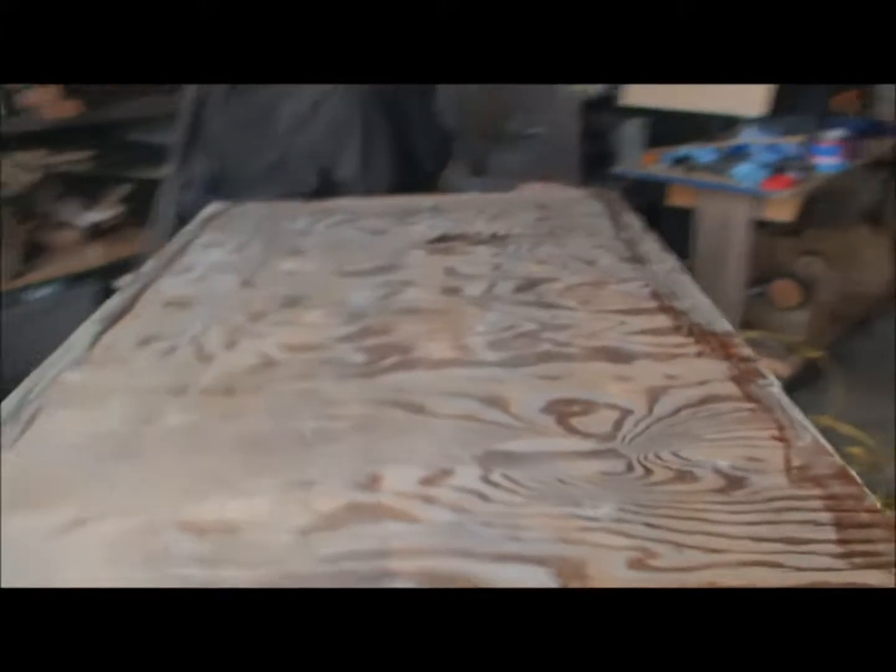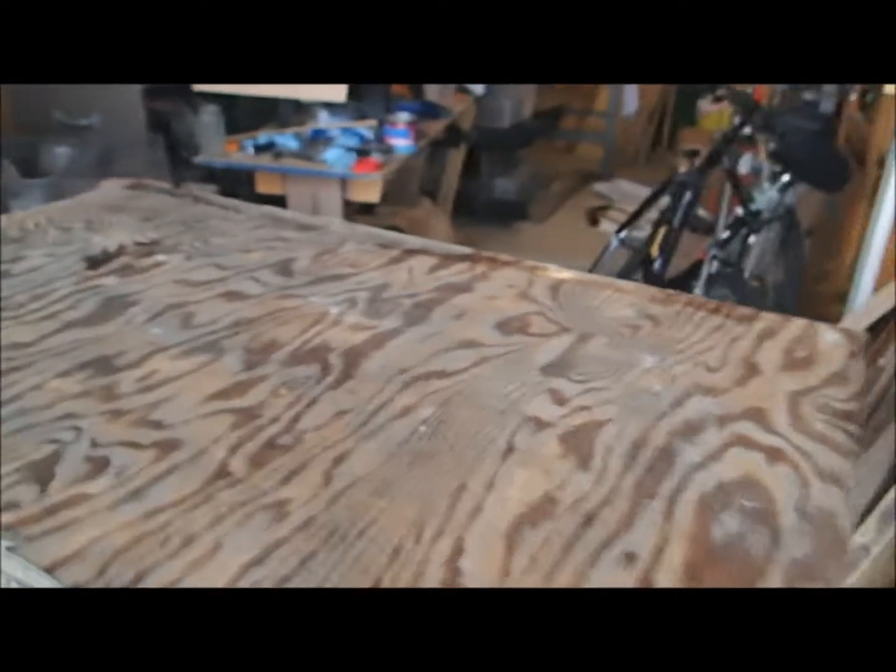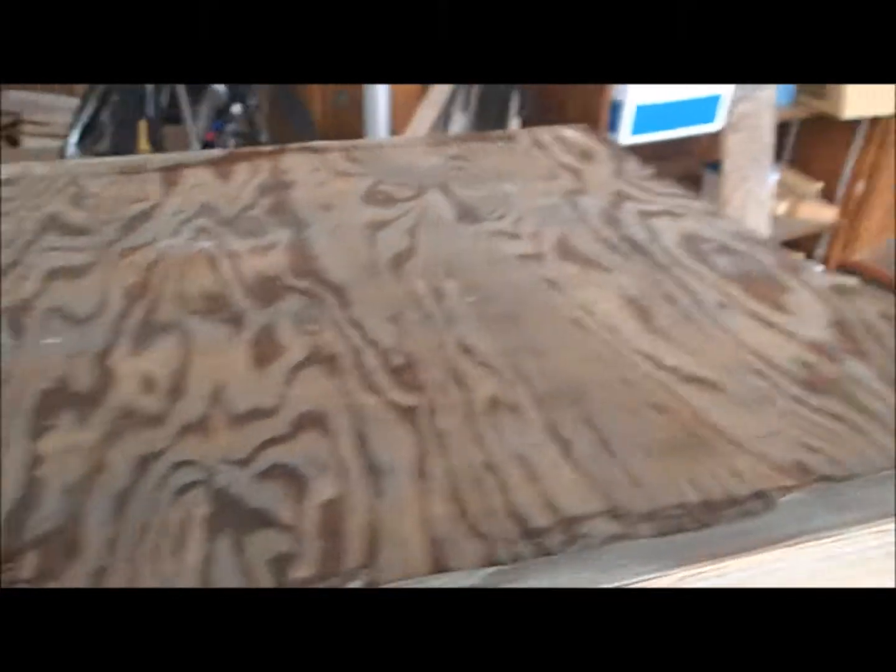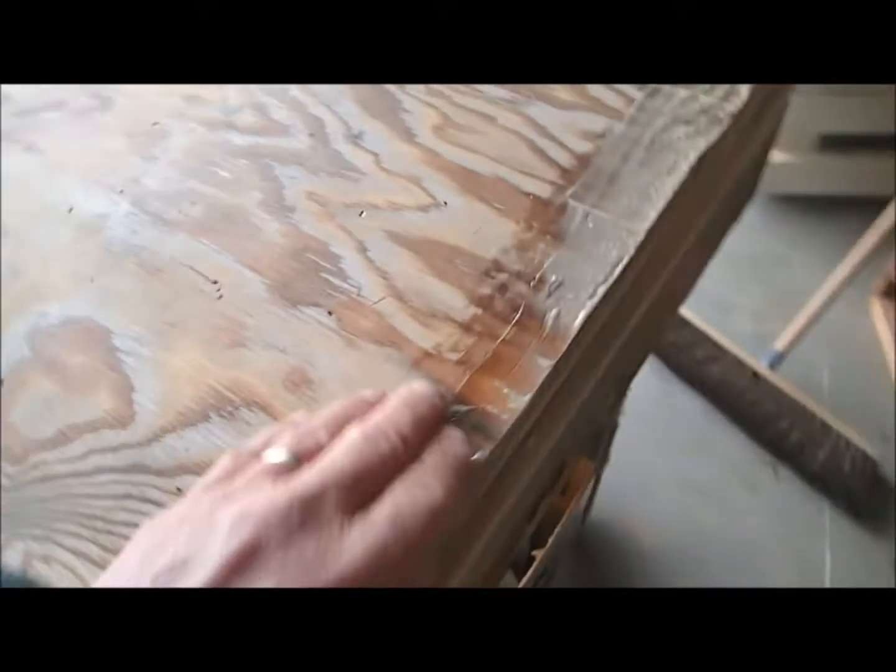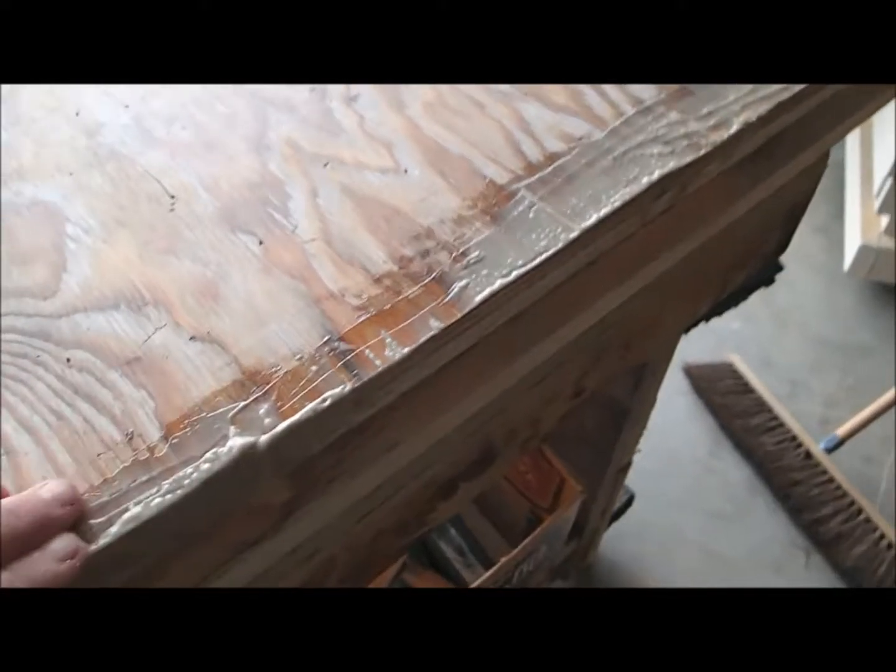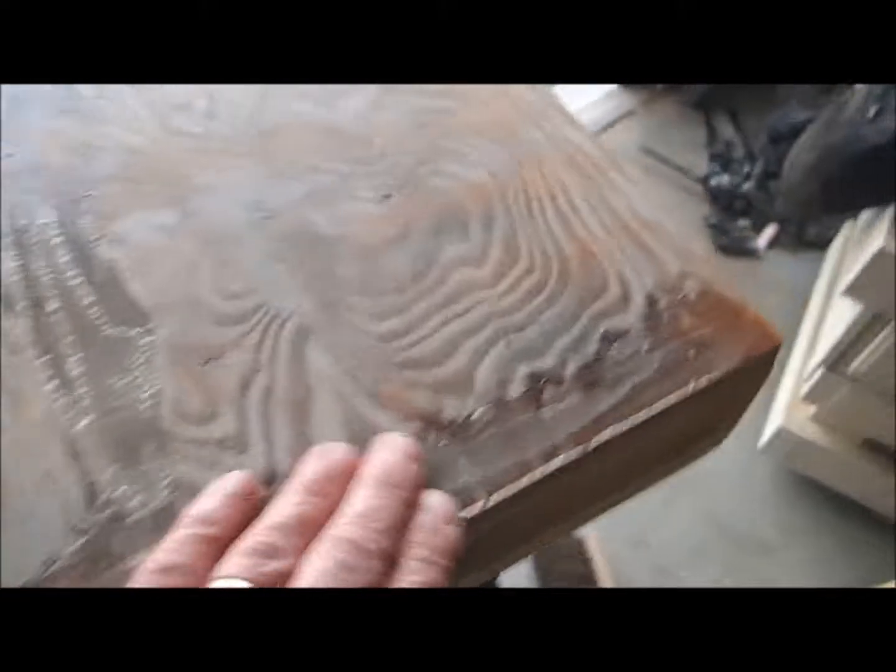All right. So yesterday I put the 3x polyurethane adhesive on here and you can, around the edges where the plywood had frayed up when I was sawing it. Also I cut a little bit too much here. So I put that adhesive on here. Now I'm going to sand it down again.